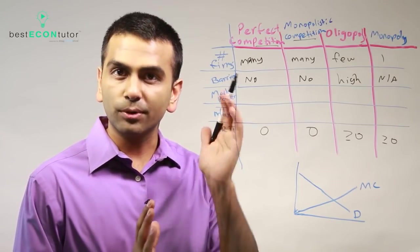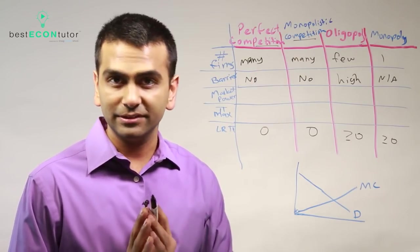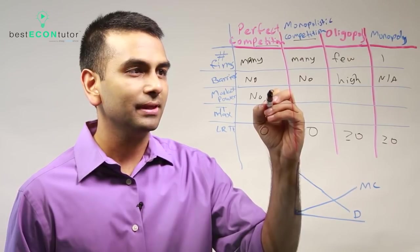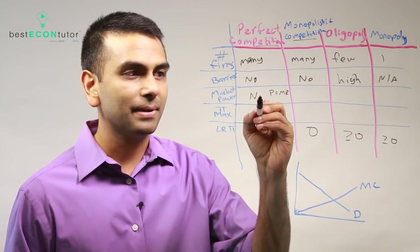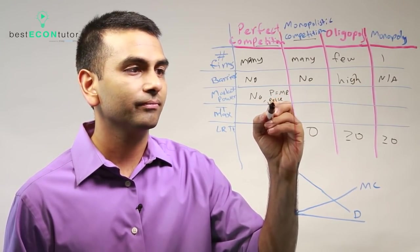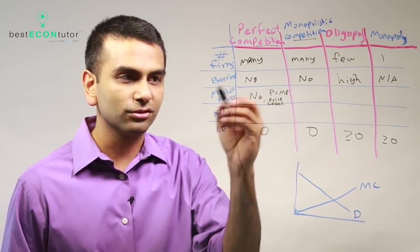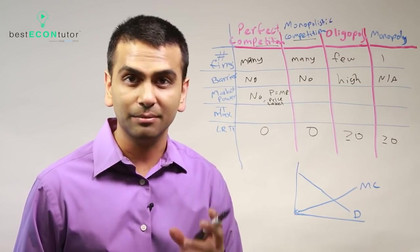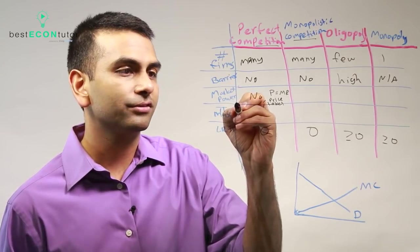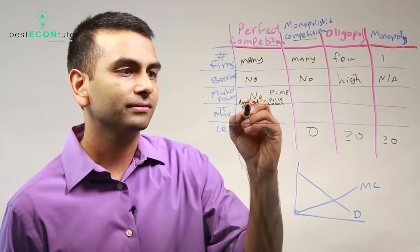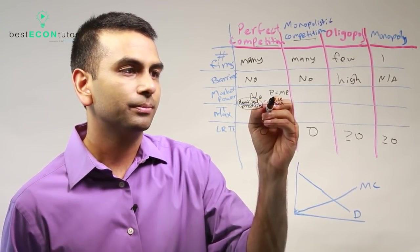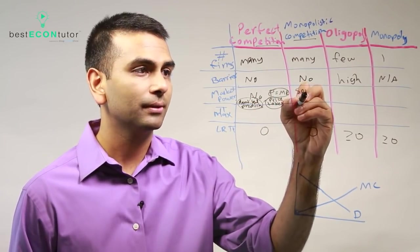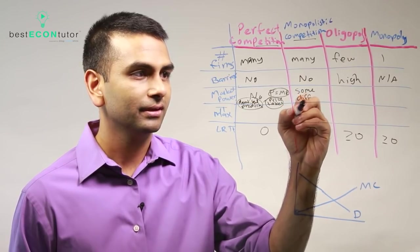In perfect competition there is no market power, which is why P equals MR, meaning you are a price taker. This is also because of identical products — in a perfectly competitive market, like selling bananas, every single person has the exact same banana and you can't even tell where it came from. In monopolistic competition, however, you have some market power because you have differentiated products.